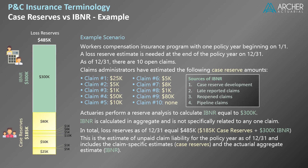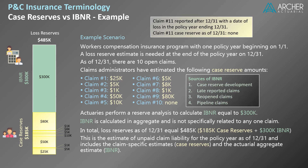Next, suppose a claim — let's call it claim number 11 — was reported after 12/31 but has a date of loss sometime in the policy year under review. Obviously, this claim has no case reserve as of 12/31, since its existence was unknown. This is an example of a late reported claim, and any payments associated with this claim must be accounted for in the estimate of IBNR as of 12/31.